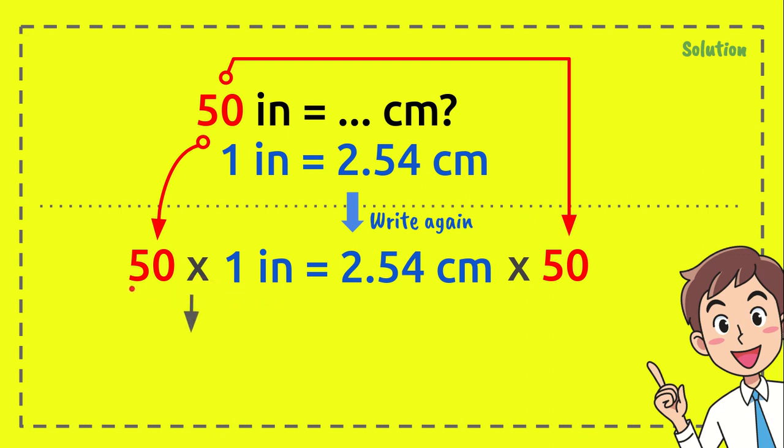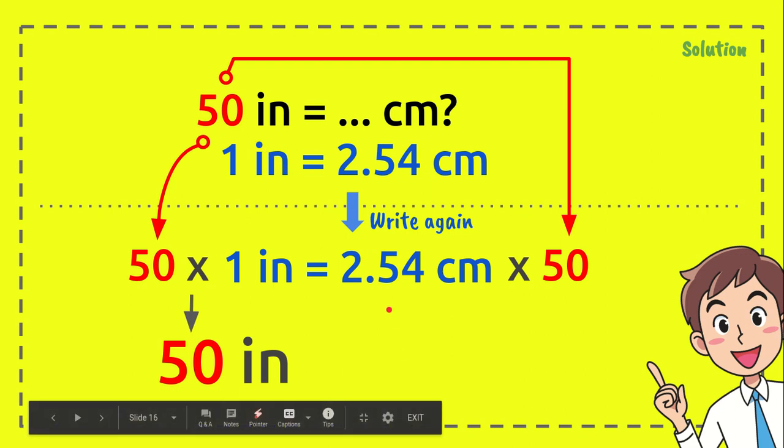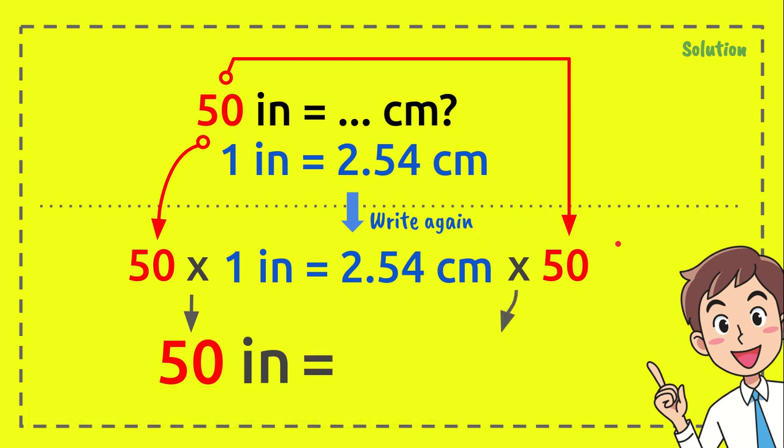And now 50 times 1 equals 50 just like the question, 50 inches, right? And then 2.54 times 50 equals 127 centimeters. And that's the answer.